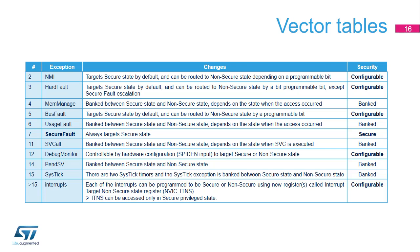A banked exception is taken in the security state in which it occurs. For example, the memory management fault, taken in case of access permission violation, is handled independently in each security domain. A new system exception called secure fault is introduced in the ARMv8-M mainline for handling security violations. It always targets the secure state.